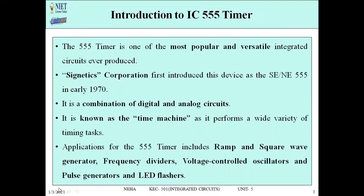The first question that arises is: why is it known as 555? When you look at its circuit diagram, you will see a voltage resistive network where three resistors are used. The value of all three resistors is 5 kilo ohms. That is why we call it 555 — because three 5 kilo ohm resistors are used.